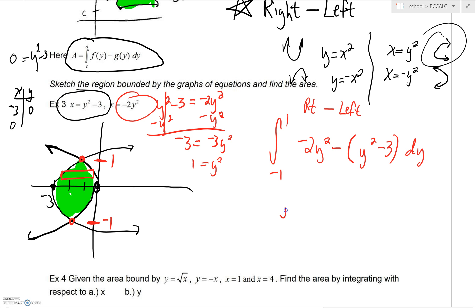It would only take a moment to distribute this negative to get negative 3y squared. I'm combining like terms a little bit, jumping ahead. That is going to be negative 1 to 1 of negative 3y squared plus 3dy.